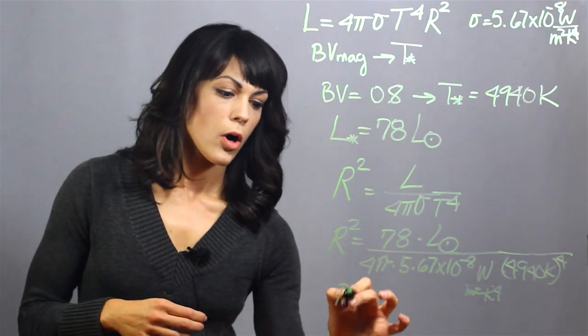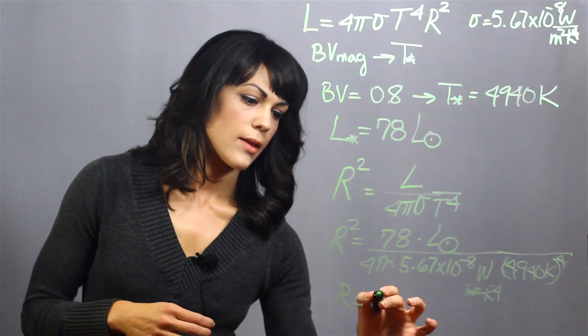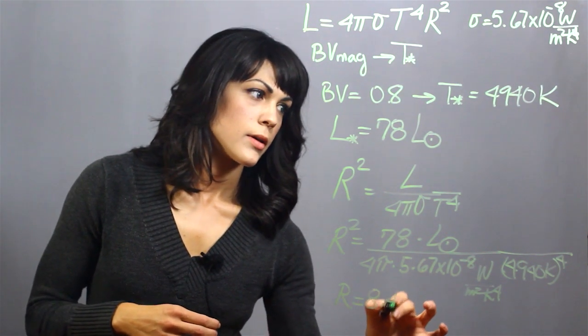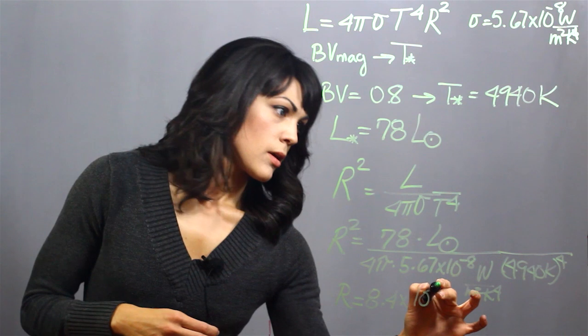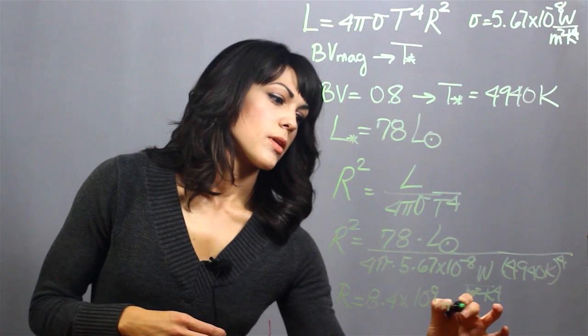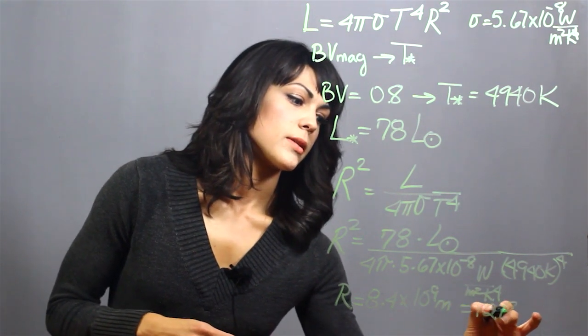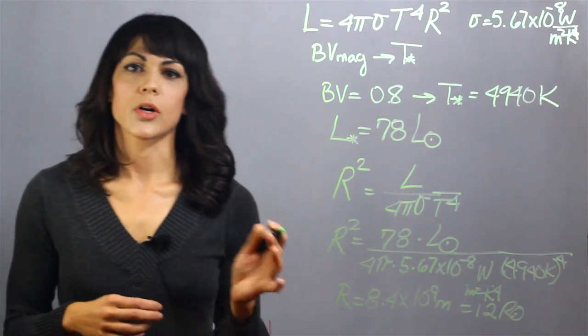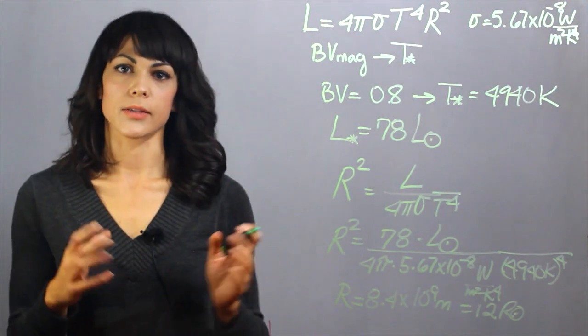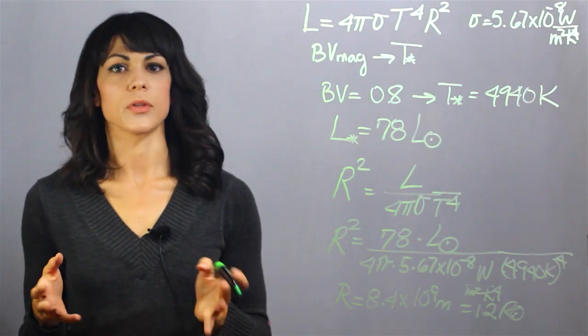If we solve for R, this gives us that it has a value of 8.4 times 10 to the 9 meters, which is about 12 times the radius of the Sun. So the star Capella is 12 times the size of the Sun. And that's how we determine the radius of a star.